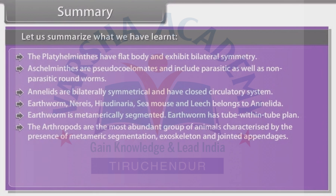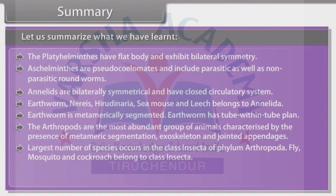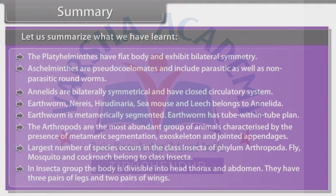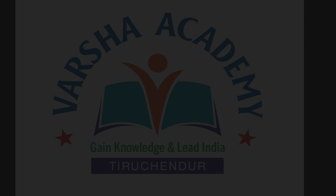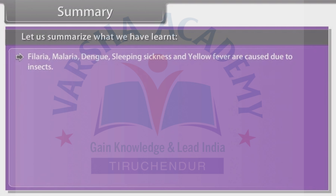The arthropods are the most abundant group of animals, characterized by the presence of metameric segmentation, exoskeleton and jointed appendages. The largest number of species occurs in the class Insecta of phylum Arthropoda. Fly, mosquito and cockroach belong to class Insecta. In the Insecta group, the body is divisible into head, thorax and abdomen, with three pairs of legs and two pairs of wings. Filaria, malaria, dengue, sleeping sickness and yellow fever are caused due to insects.